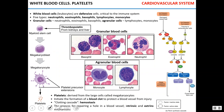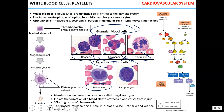White blood cells are responsible for defending the body against pathogens and are critical for proper immune system functioning. There are two main types: granular and agranular. Granular white blood cells include basophils (responsible for inflammation and some allergic responses), eosinophils (protecting against parasites), and neutrophils (protecting against bacteria). Agranular white blood cells include monocytes, which develop into macrophages that destroy debris, bacteria, and infected cells, and lymphocytes, which are indispensable in protection against viruses.